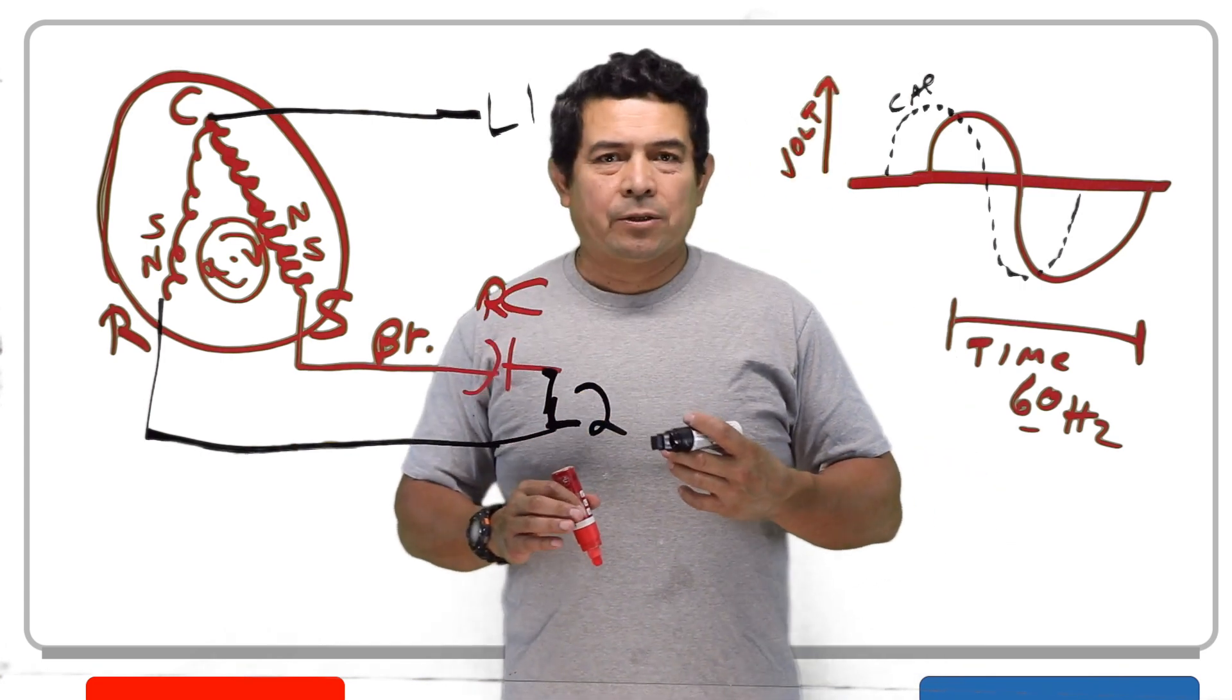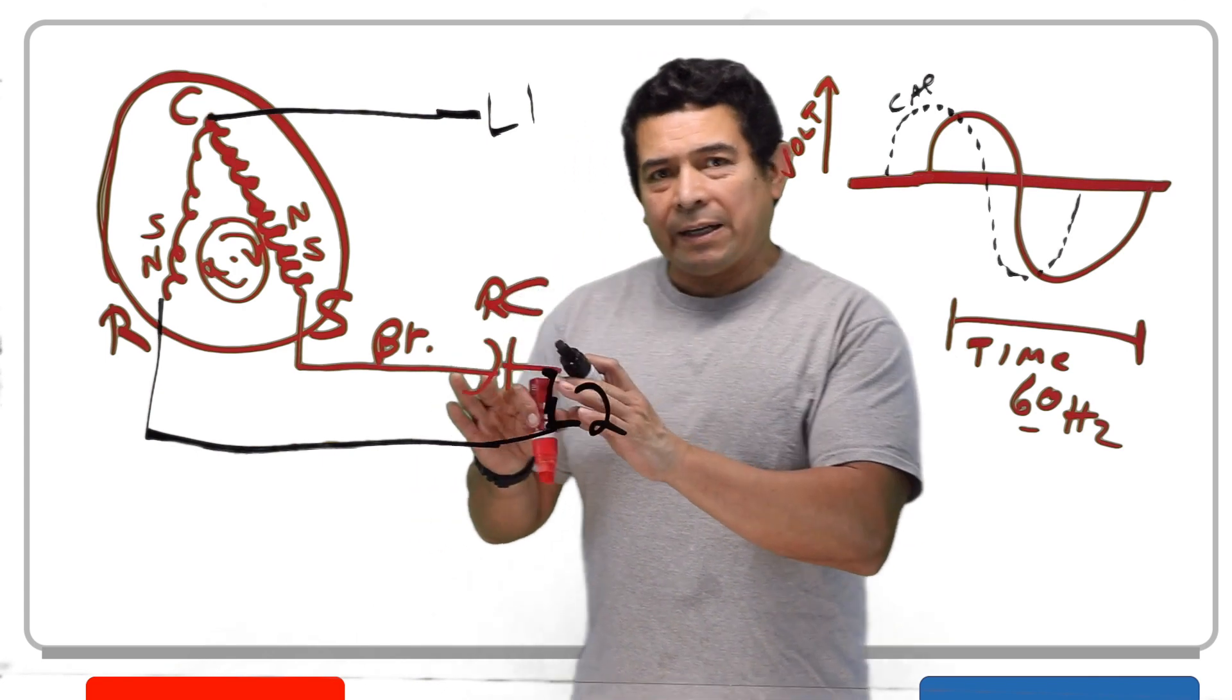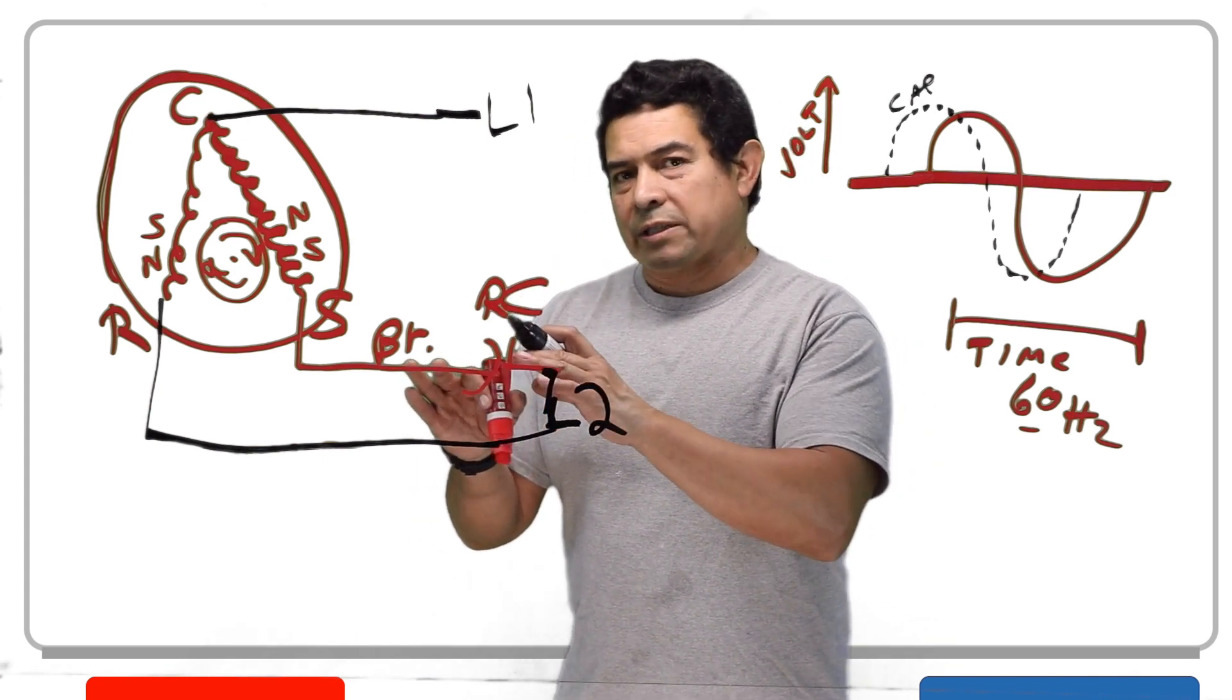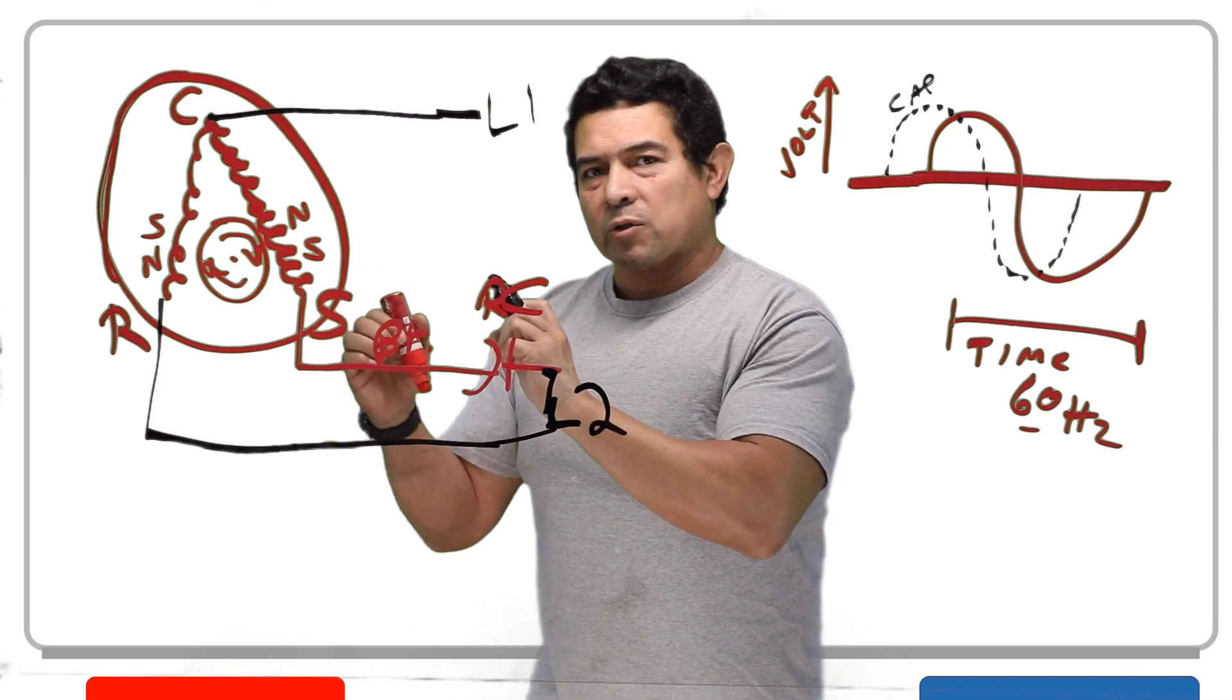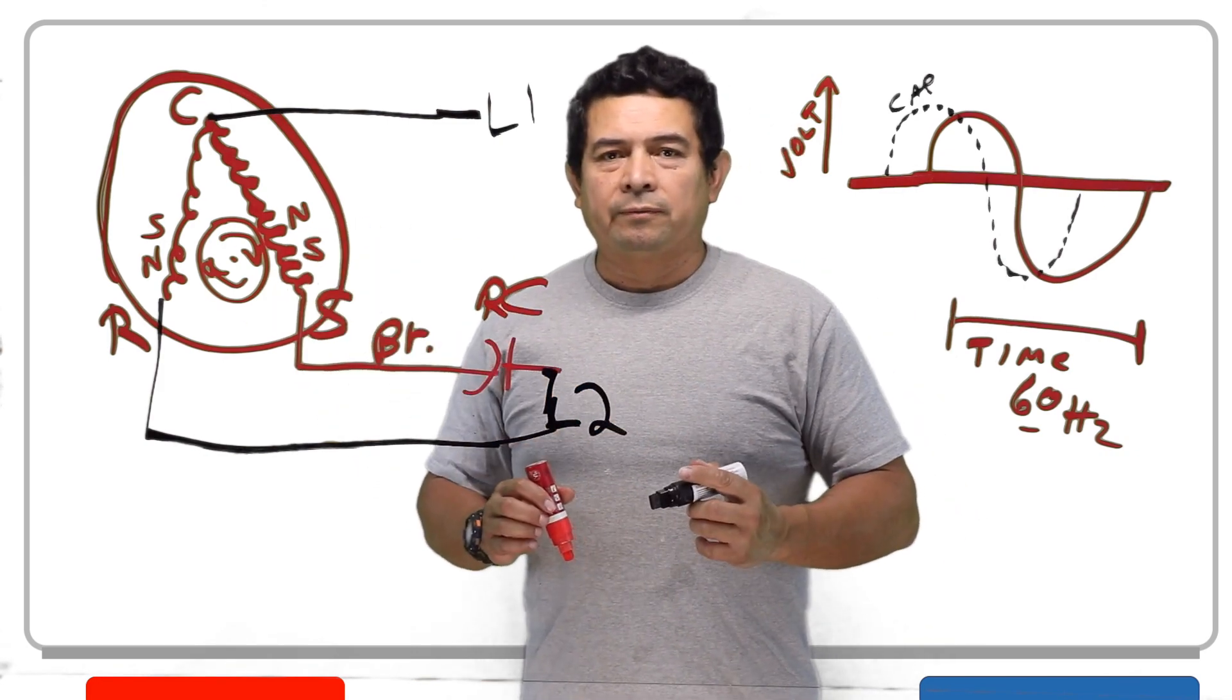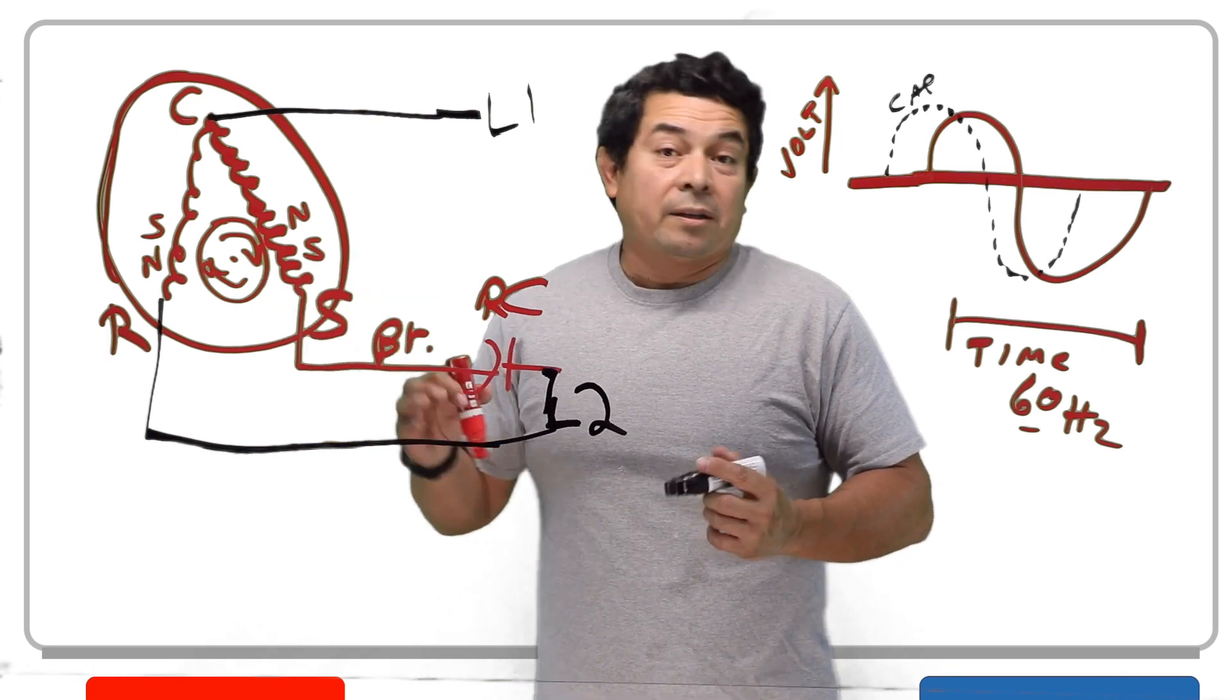So now let's say that your capacitor happens to be bad. If your capacitor is bad and it's not doing anything, what's going to happen now is you can get north on both sides, south on both sides, north on both sides, south on both sides. So that rotor, what is that rotor going to do? It's going to sit there and lock up. It's going to lock up and it's not going to do anything.